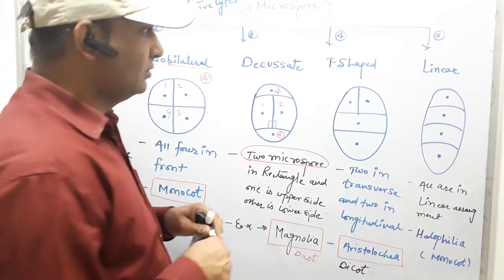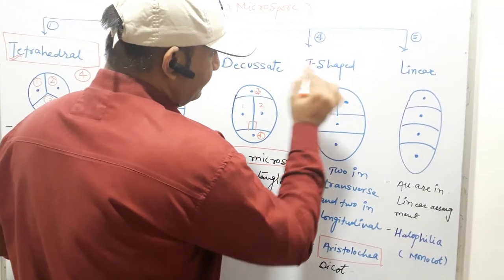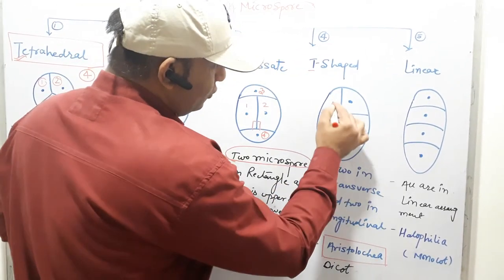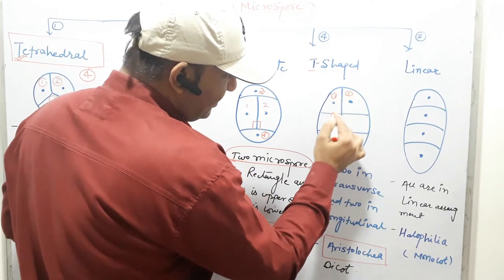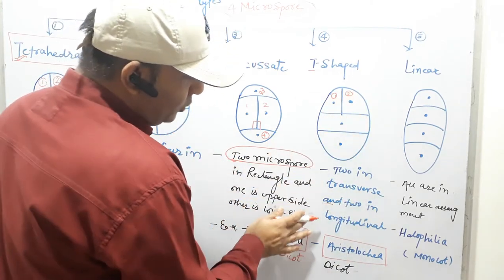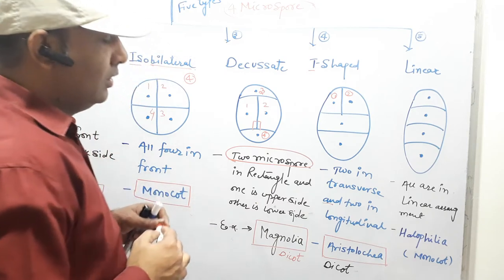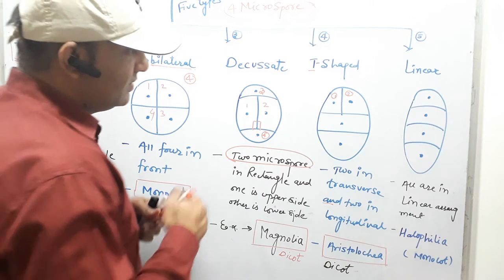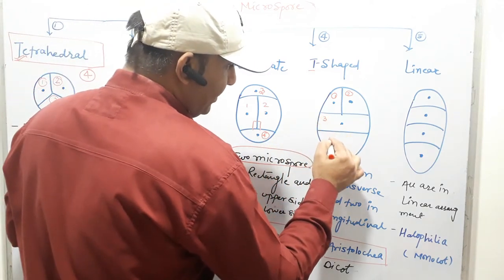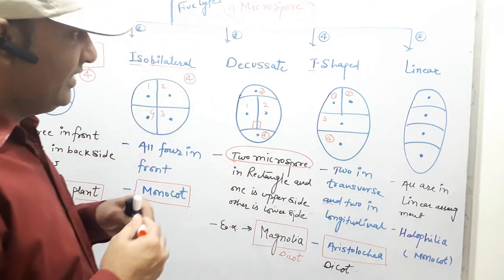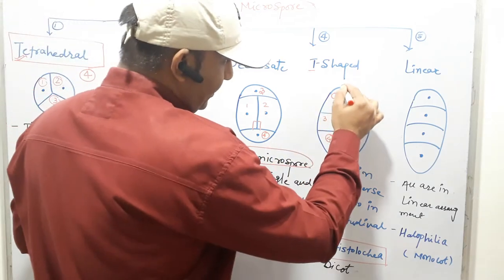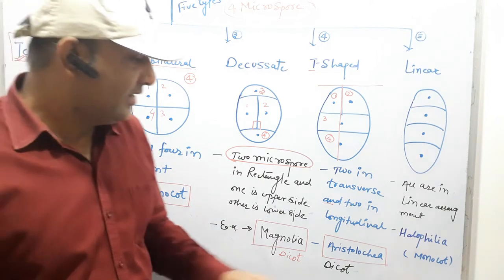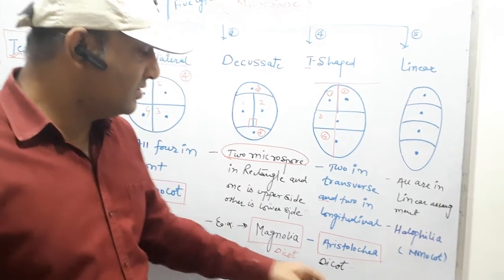Fourth is T-shaped. In the T-shaped tetrad, the first and second microspores are present in the transversal arrangement, and the remaining two — third and fourth — are present in the longitudinal arrangement. So two in transversal form and two in longitudinal form. This is called T-shaped tetrad, and its example is Aristolochia, which is a dicot plant.